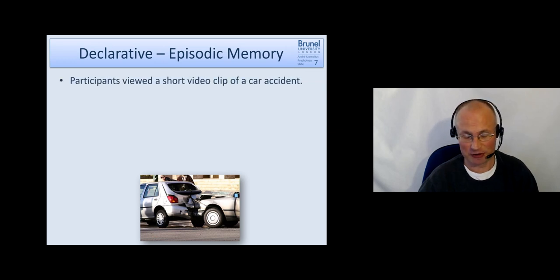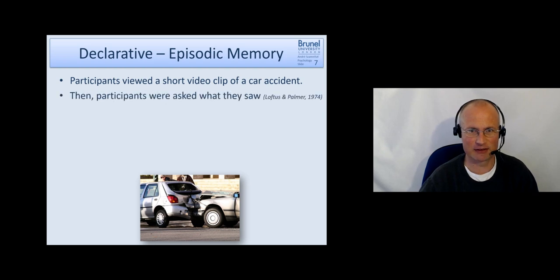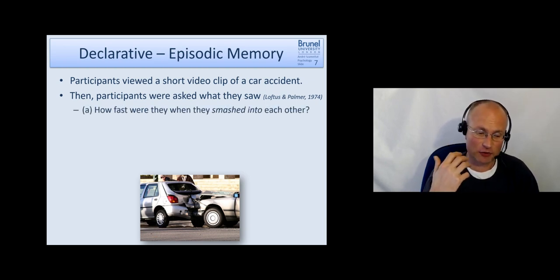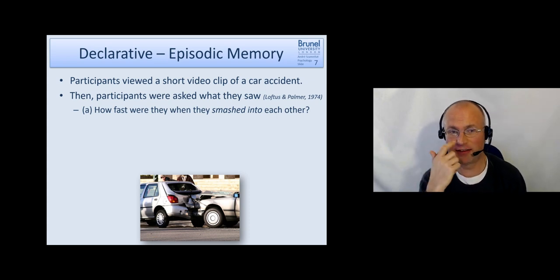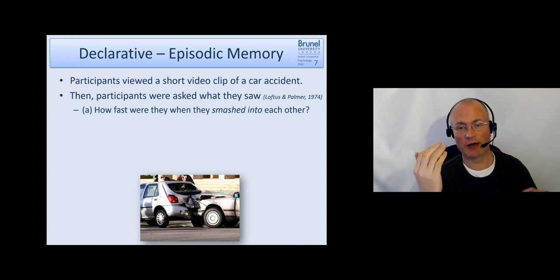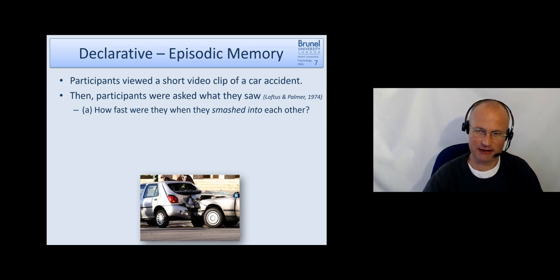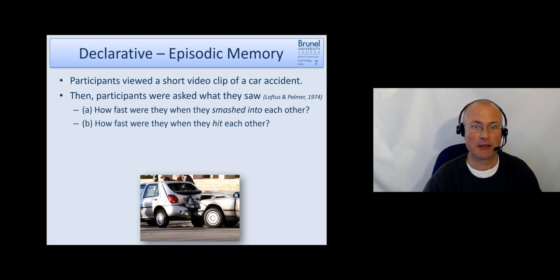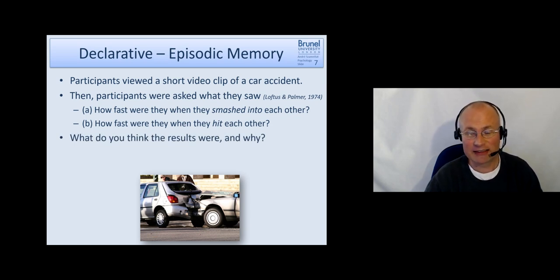Okay, so let's have a look at a couple of studies which have been done by Loftus and her group. In this example, participants viewed a short video clip of a car accident. Afterwards, participants were asked what they saw and were asked to provide an estimate in miles per hour how fast they think the cars have been. This is really an objective thing. All people have seen the same video clip where a car with an objective speed moved along and crashed into another car. What they manipulated across different groups of participants was the word they used to describe the collision. So they could ask how fast were they when they smashed into each other, how fast were they when they hit each other, and also how fast were they when they contacted each other.